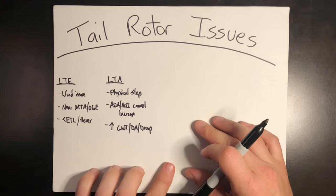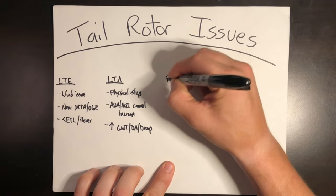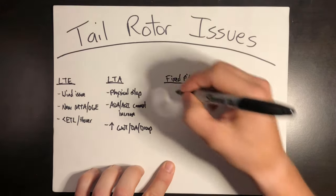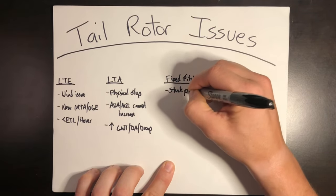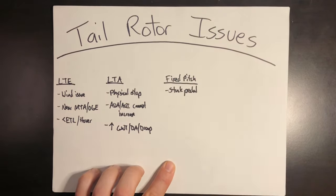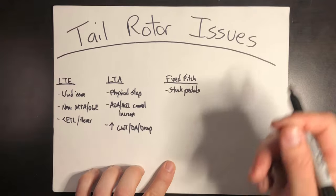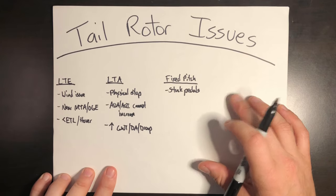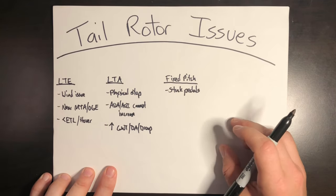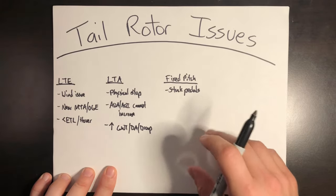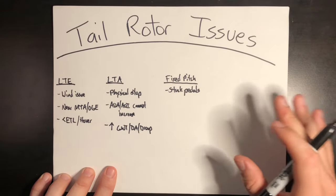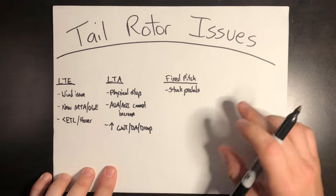Moving on to the next type of tail rotor issue: this is what's known as a fixed pitch, or a stuck pedal, depending on how you call it. Different manuals refer to it as different things, and it can vary by a few different things in the flight controls. This could be a jammed rod or cable in the flight controls that doesn't allow the tail rotor to move, or it could be an electronic failure of a flight computer that doesn't allow the tail rotor to move. Either way, the tail rotor acts as if the pedals are stuck in a fixed pitch condition that doesn't change — it's in the last position it was in with no change. So in either case, you don't have control of the tail rotor.